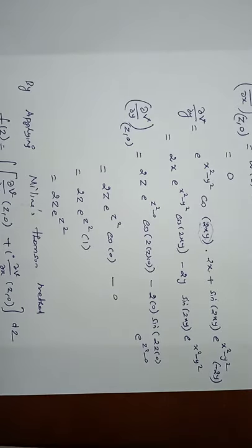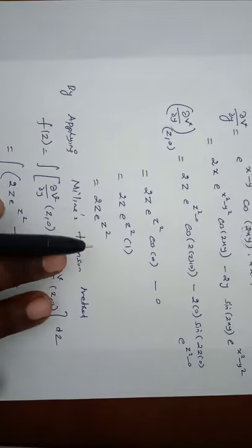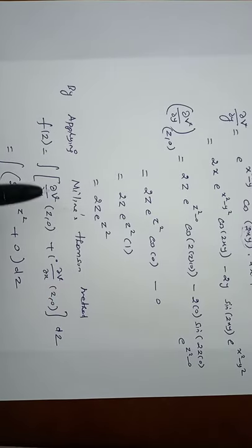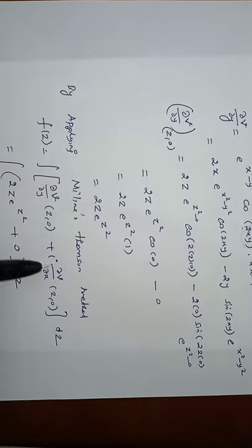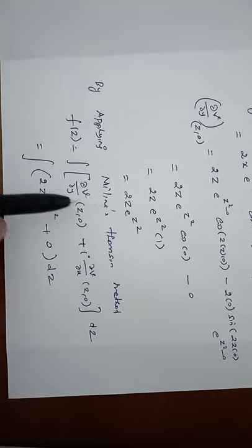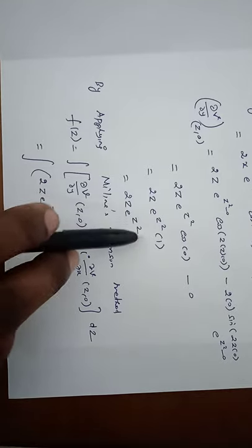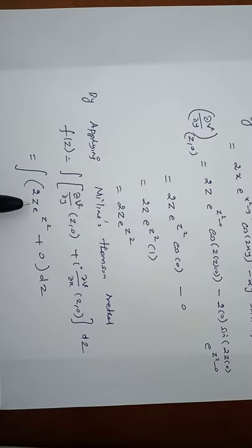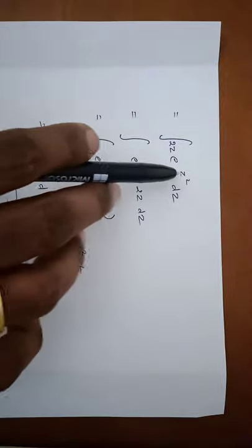Finally, we apply the Milne-Thompson formula. Since the imaginary part is given, f(z) = ∫[∂v/∂y|(z,0) + i·∂v/∂x|(z,0)] dz. Substituting our values: ∂v/∂y at (z,0) = 2z·e^(z²) and ∂v/∂x at (z,0) = 0. So f(z) = ∫(2z·e^(z²) + 0) dz = ∫2z·e^(z²) dz.